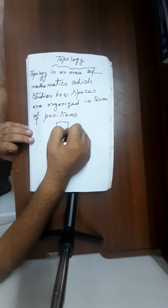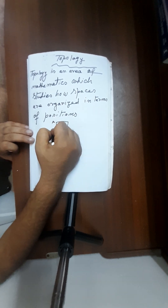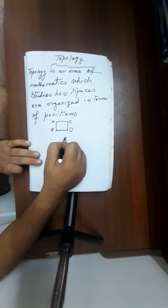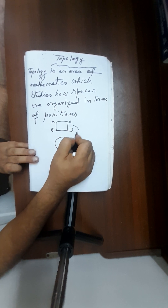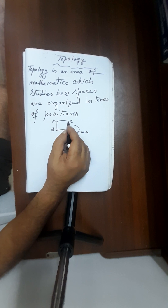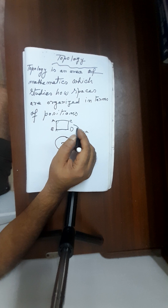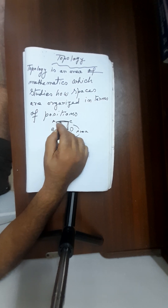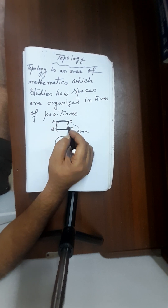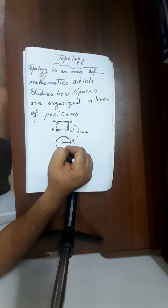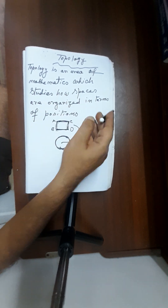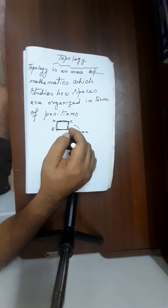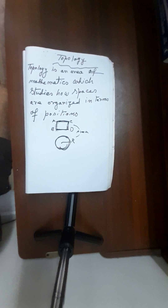For example, suppose you have a square with positions A, B, C, D. You can convert this square into a circle with radius R, and the area will remain the same. Without breaking the shape — you cannot break it — you convert the square or rectangle into a circle. So this is a basic example of topology: it studies how spaces are organized in terms of positions. The coordinates may change and the space will change, but that is what topology is.